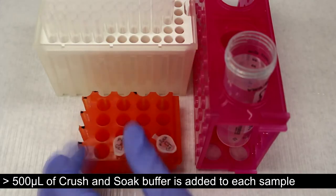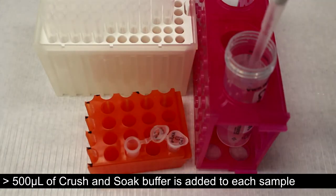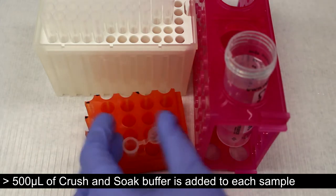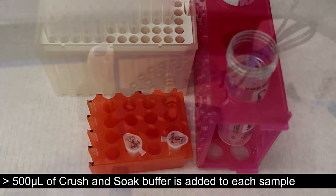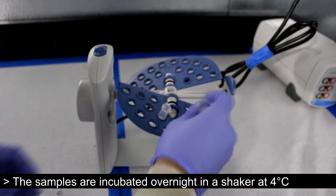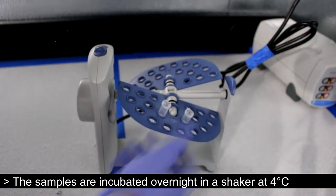500 microliters of crush-and-soak buffer are added to each sample. The samples are then incubated overnight in a shaker at 4 degrees Celsius.